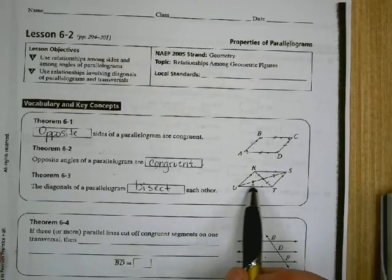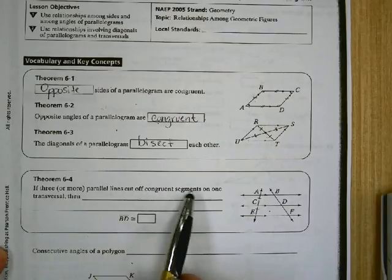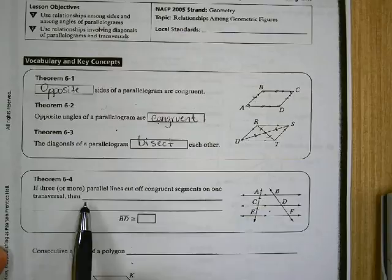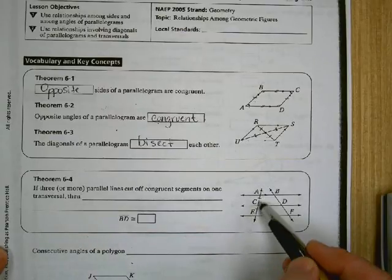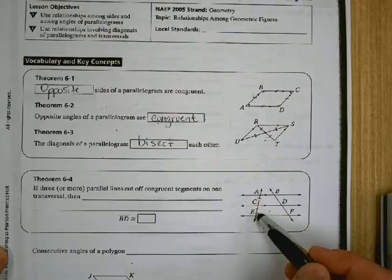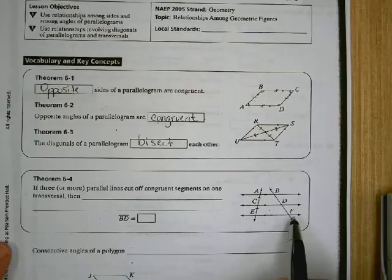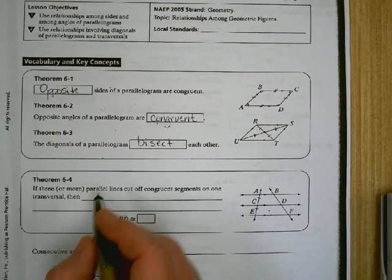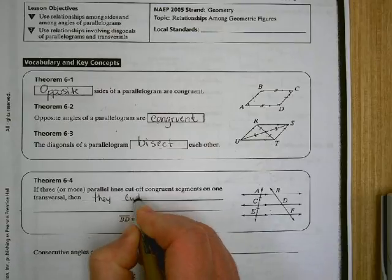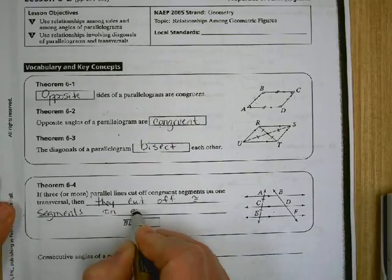Theorem 6-4 says, if three or more parallel lines cut off congruent segments on one transversal, so you've got three parallel lines, you've got this transversal. If this segment is congruent to this segment, then the three parallel lines are the same distance from each other. Well, if they're parallel and they're the same distance from each other right here, they're also going to be the same distance from each other over there because that's what parallel means. They don't move.